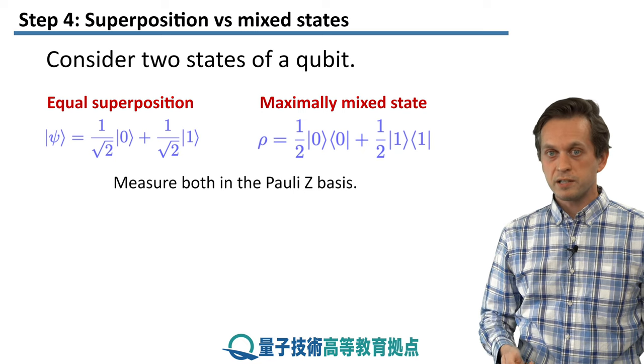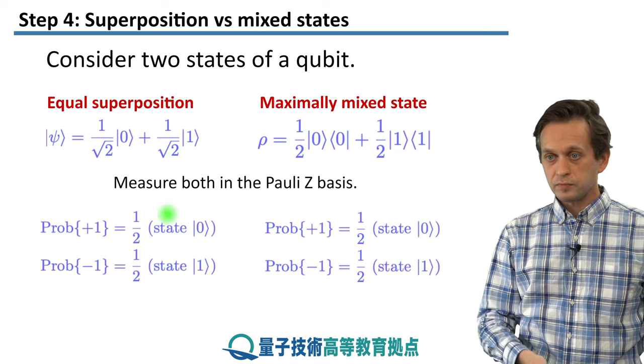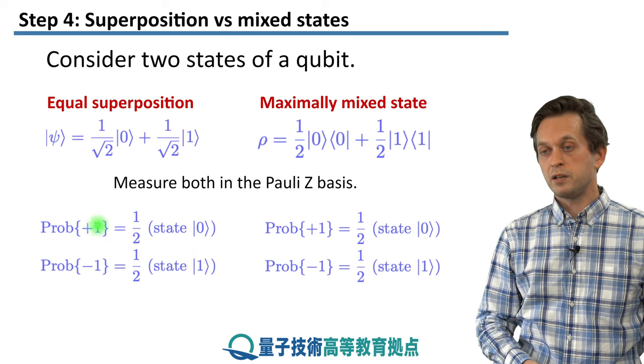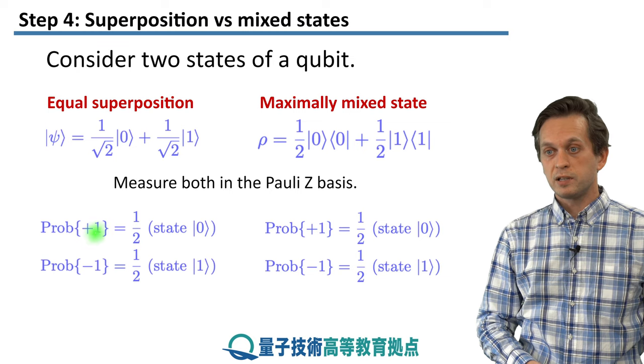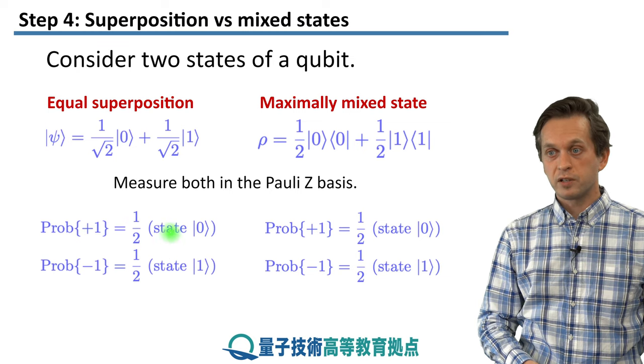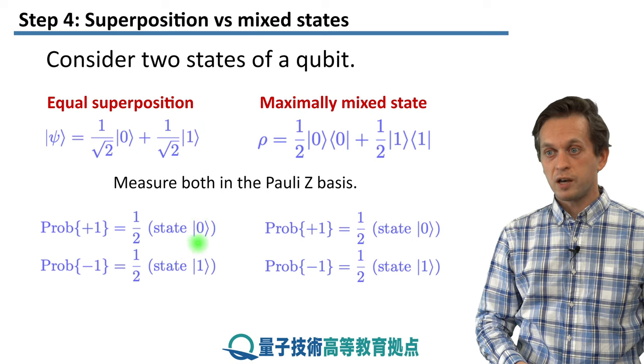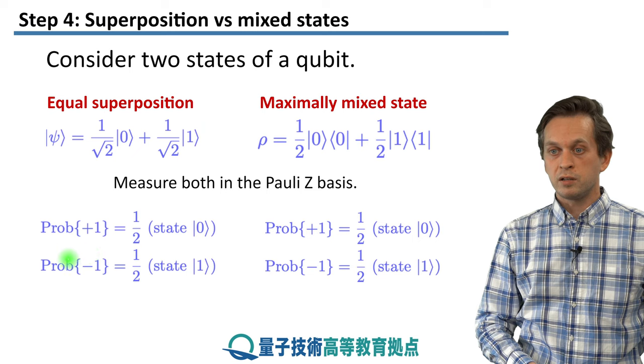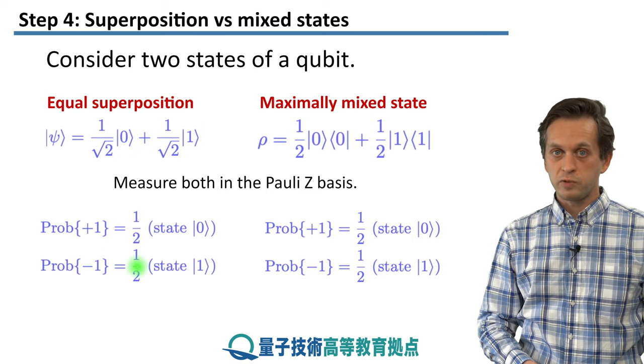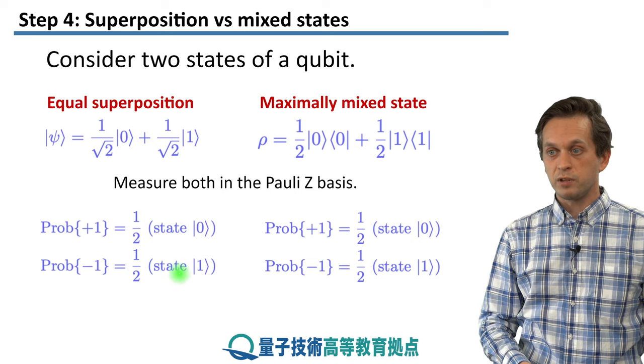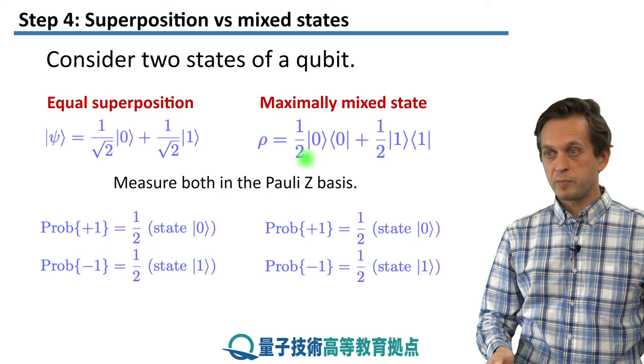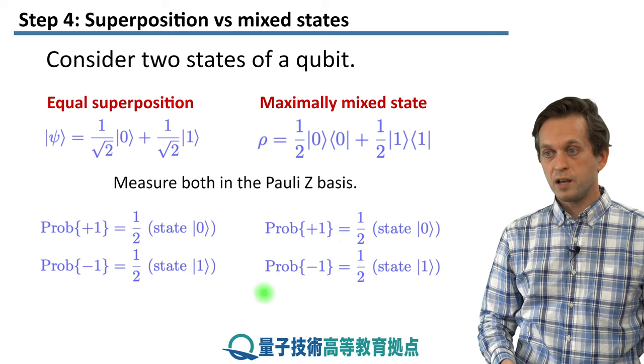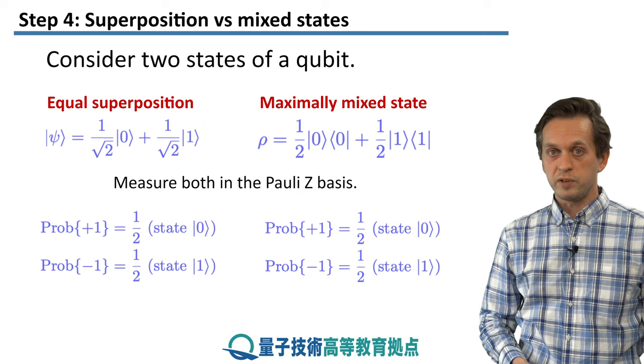Well, we can measure them in the Z basis and we get exactly what I just said. For the equal superposition, we will find that we get the probability of the plus 1 outcome to be a half. So after the measurement, half of the time we will find the state in state 0. And for the minus 1 outcome, the probability is 1 over 2, again 50%, and then the state is found in 1. And this is true also for the maximally mixed state. The probability of outcome plus 1 is 50%, and the probability of state minus 1 is also 50%.